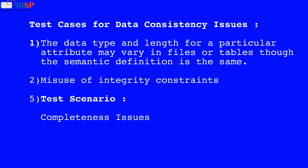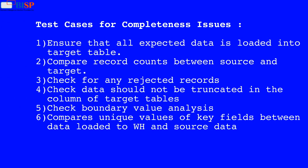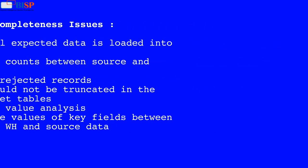Test Scenario 5: For completeness issues. Test cases for completeness issues: 1. Ensure that all expected data is loaded into the target table. 2. Compare record counts between source and target. 3. Check for any rejected records. 4. Check that data should not be truncated in the column of target tables. 5. Check boundary value analysis. 6. Compare unique values of key fields between data loaded to the data warehouse and source data.